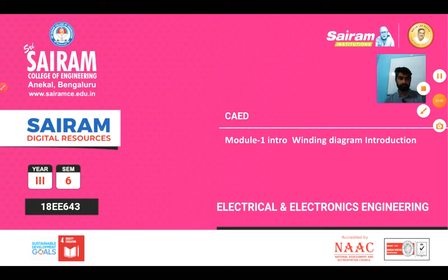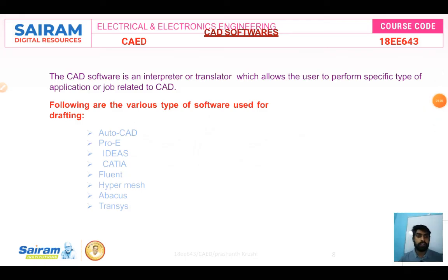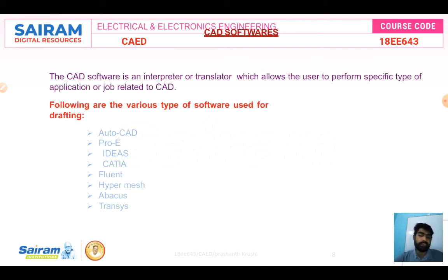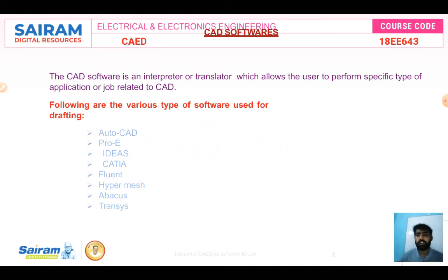CAD software is an interpreter or translator which allows the user to perform specific types of applications or jobs related to CAD. This CAD software — if you want to plan something or design something, you can use it.